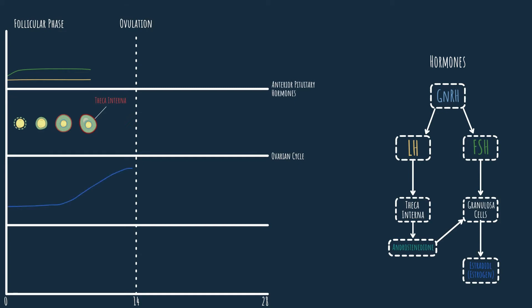Let's also put estradiol on the graph. We can see that it steadily rises as we advance in the cycle. What causes this steady rise? As the follicles mature, the granulosa cells proliferate and expand their numbers more and more. As we've just mentioned, the granulosa cells are the source of estradiol. So more granulosa cells equals more estradiol.